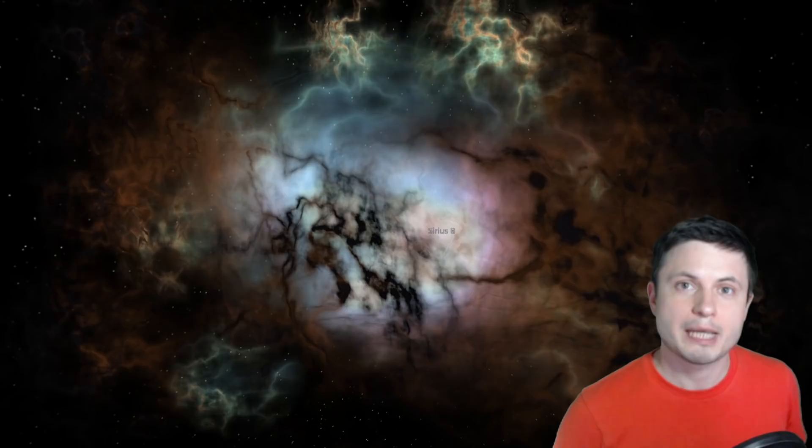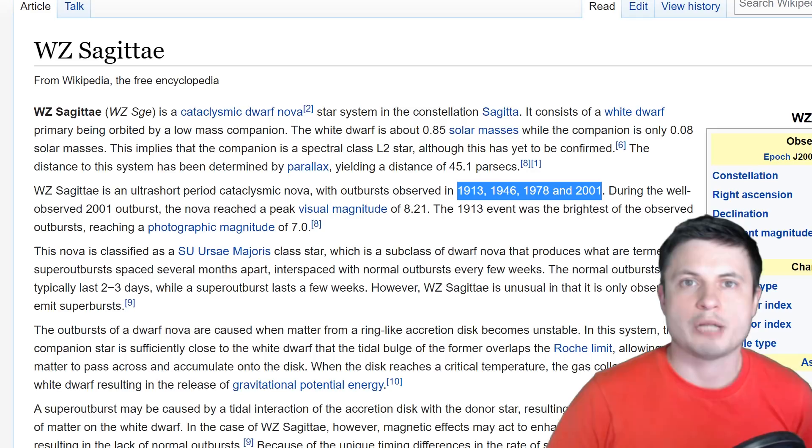When it comes to different space explosions there are obviously things like supernova which I'm sure most of you are familiar with, but there are also explosions known as nova which is actually a very different type of explosion and a very different concept even though the name itself is very similar. One of the more famous well-studied stars that actually do have a lot of these nova happening are so-called WZ Sagittae stars. We've seen at least four of them in these four time periods.